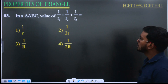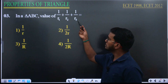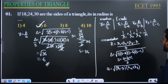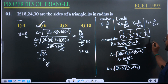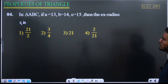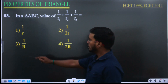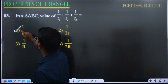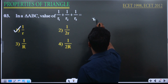This is the standard formula: 1/r1 plus 1/r2 plus 1/r3 equals 1/r. This is a direct formula question. The answer is directly 1/r. If you want to prove it: r1 equals delta by (s minus a), r2 equals delta by (s minus b), r3 equals delta by (s minus c).